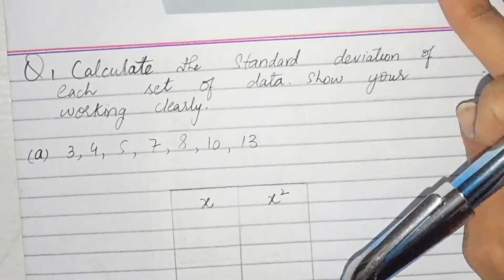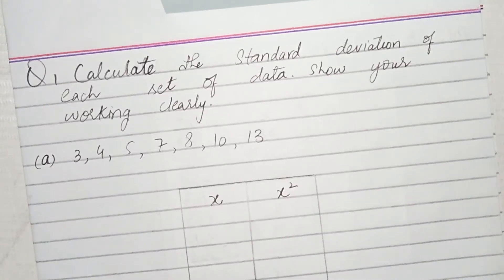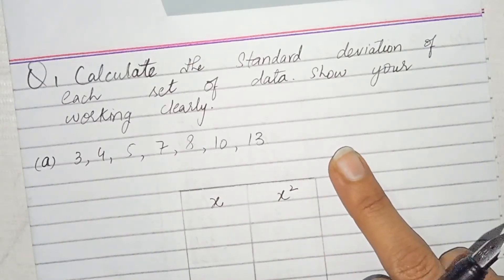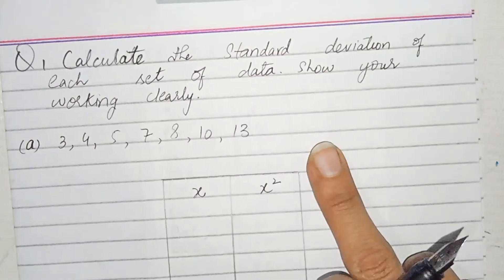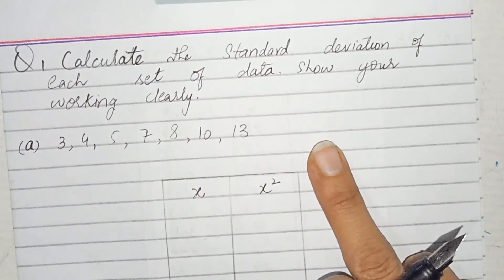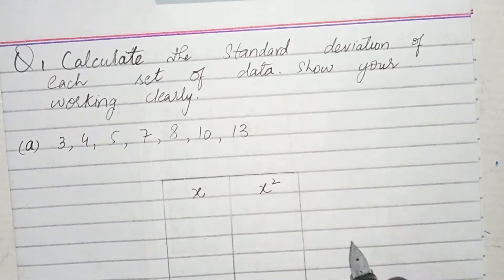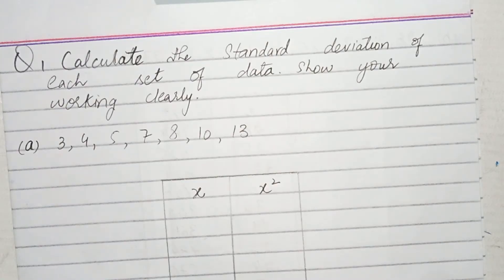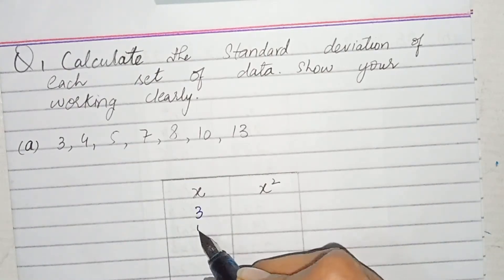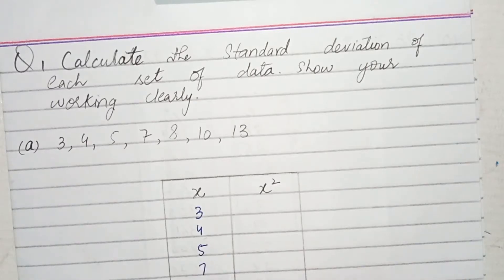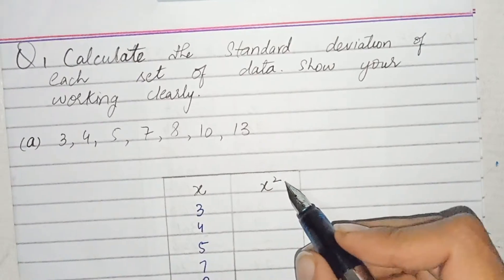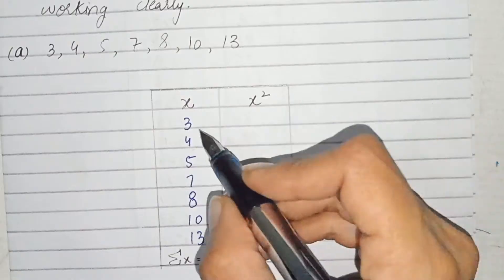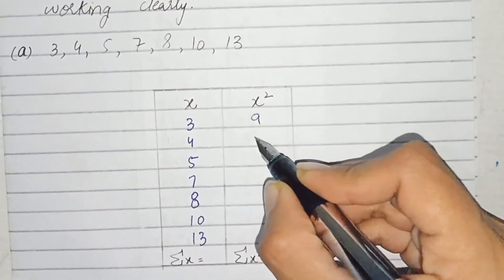Question number one: calculate the standard deviation of each set of data, show your working clearly. The data is provided and we have to find the standard deviation. The x values are 3, 4, 5, 7, 8, 10, and 13. Now we have to find x squared: 9, 16, 25, 49, 64, 100, and 169.